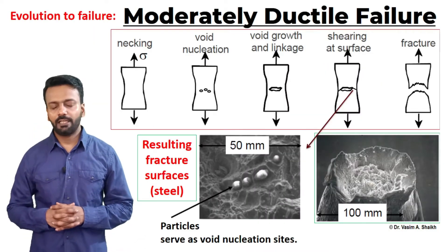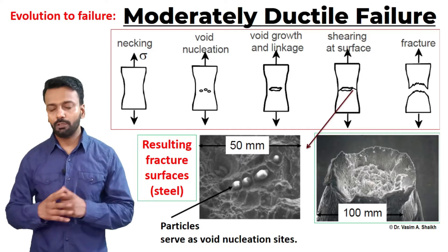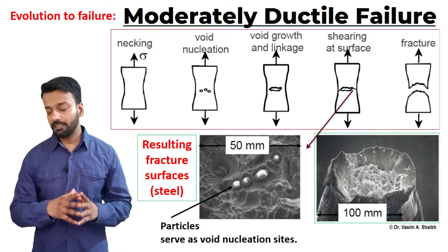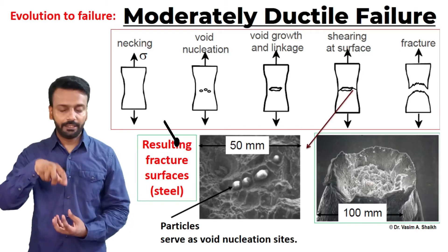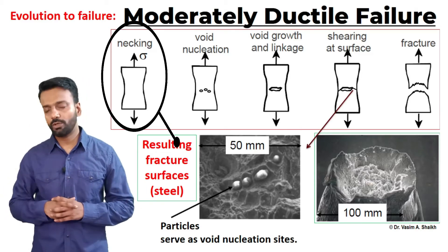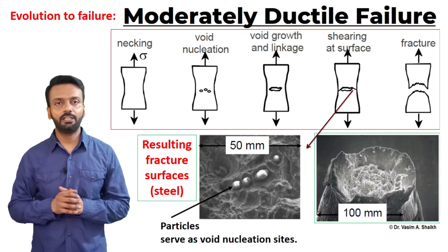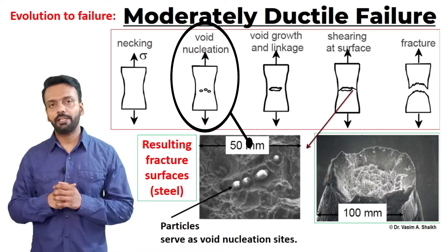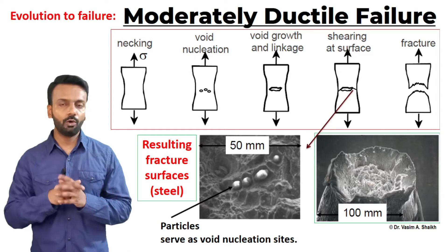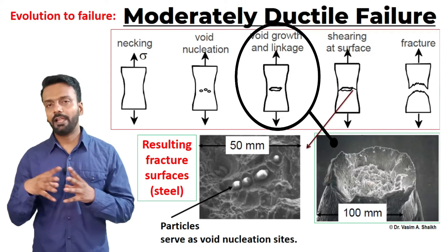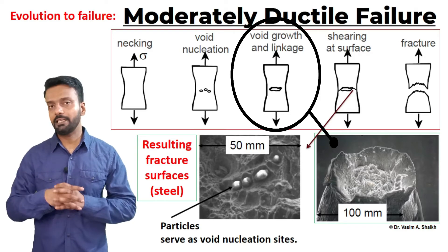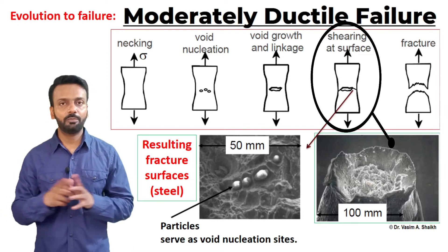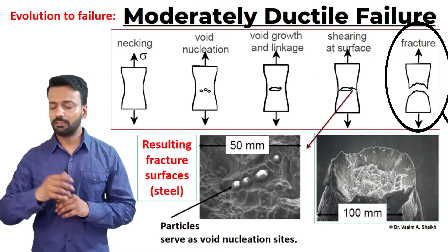Let us look into the moderately ductile failure of a material — the evolution of failure when it is going through uniaxial tensile loading. In the first image, the material is loaded in tension and you can see there is a small necking happening. As we increase the load, small voids will nucleate, and as we keep on increasing the load, these small voids will come together and link together. As we keep on increasing the load, there will be shearing at that surface and the material will fail.